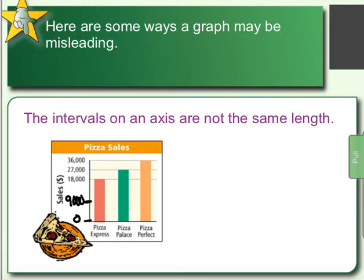What this does is it makes it seem like Pizza Express is really doing better than it is, and Pizza Perfect really isn't that far ahead of them. When in reality, if Pizza Express is 18,000 and Pizza Perfect is 36,000, that's actually double — Pizza Perfect is doing double the amount of sales as Pizza Express, even though this graph makes it look like there's really not that much difference. This could be used by Pizza Express to show they're pretty close to their competition. It's misleading.